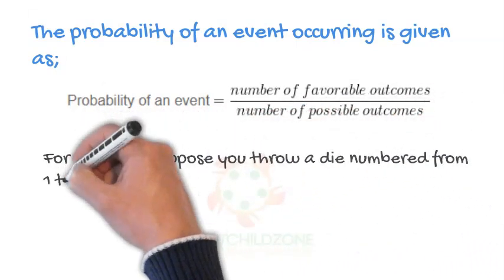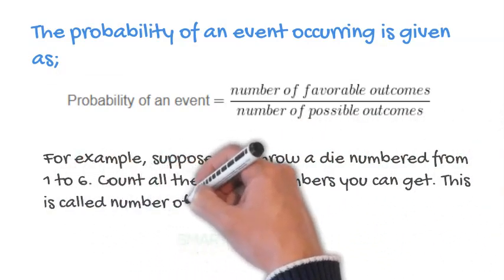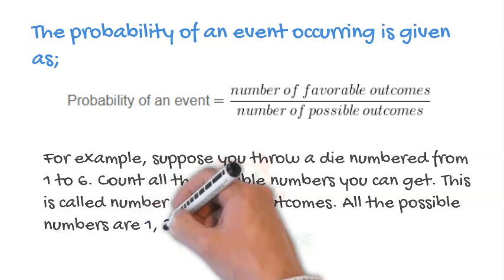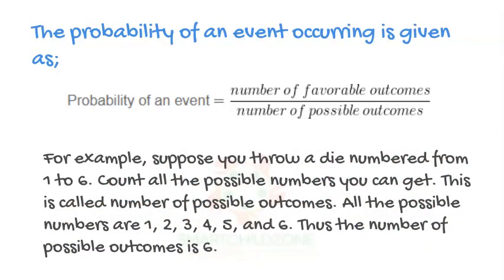For example, suppose you throw a die numbered from 1 to 6. Count all the possible numbers you can get. This is called number of possible outcomes. All the possible numbers are 1, 2, 3, 4, 5, and 6. Thus the number of possible outcomes is 6.